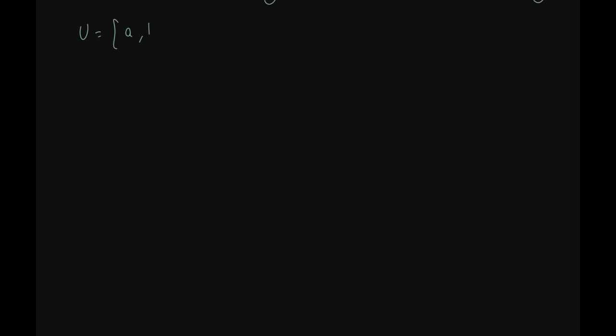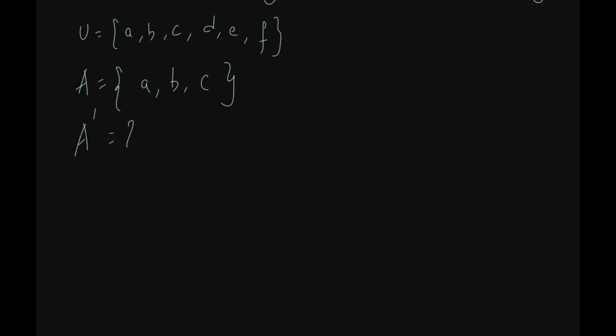For example, U is the Universal Set equal to {A, B, C, D, E, F} — 6 elements. Set A is equal to {A, B, C}. So the complement of Set A is {D, E, F} — the elements in the Universal Set that are not in Set A.